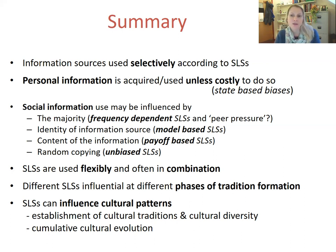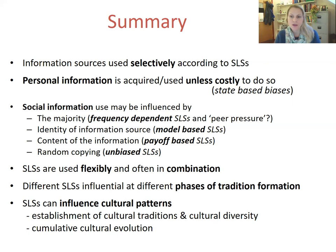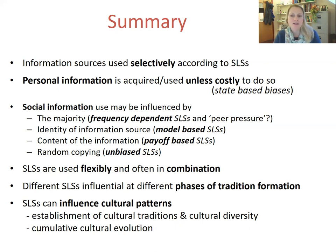The use of social information may be influenced by a copy-the-majority strategy — a frequency-dependent social learning strategy — though remember the alternative use of the term conformity relates more to peer pressure. Social learning may also be influenced by the identity of the information source: model-based bias strategies such as copy dominant males or females, prestigious individuals, or older individuals. The propensity to socially learn may also be influenced by the content of the information or behavioural trait — direct biases such as an assessment of the payoff of a displayed behaviour. Finally, social information may be acquired through random copying, describing unbiased social learning strategies.